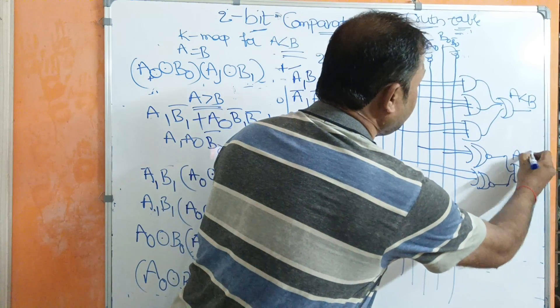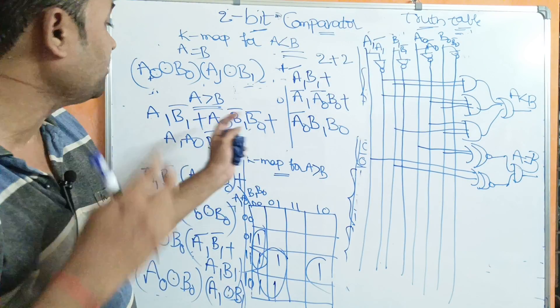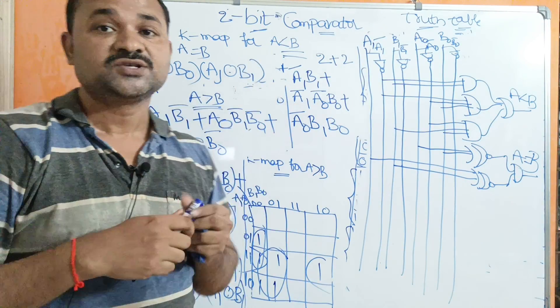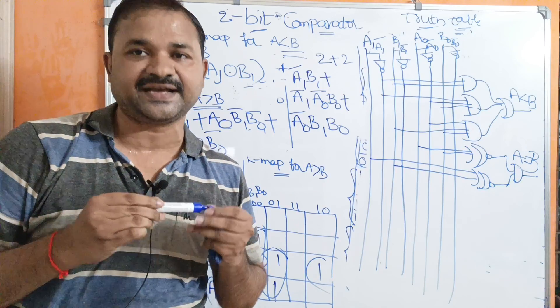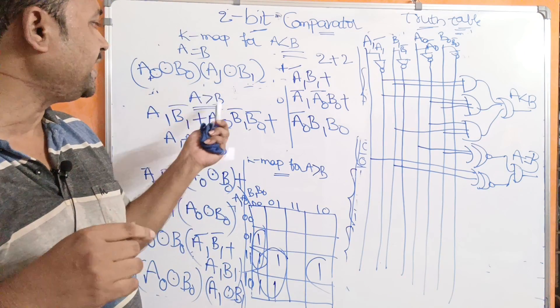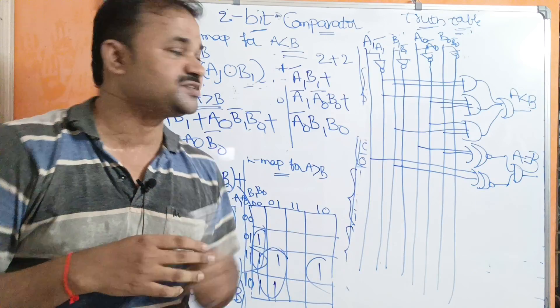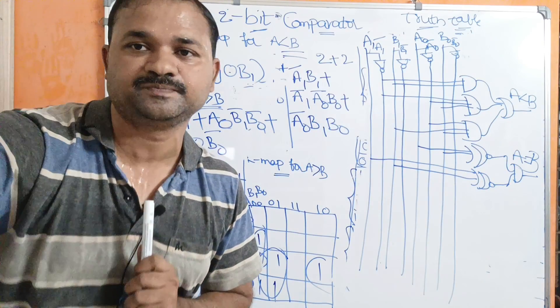Likewise, we can easily derive the logic for A greater than B in the same manner. This completes our discussion of the 2-bit comparator — covering the truth table, how to derive the Boolean expressions, and the logic diagram.